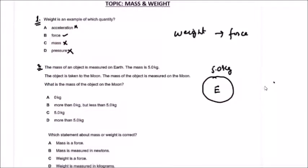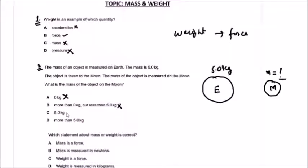Now the object is taken to the Moon. One important thing to know about mass: mass does not change from place to place. Whether you are moving from one place to another, or from one planet to another, mass is a universal constant. So the mass on the Moon will be the same — 5.0 kg.